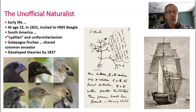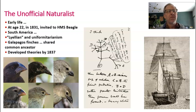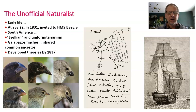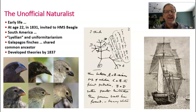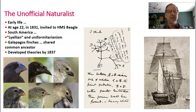Now we get to Darwin — the chapter title in your book is 'The Unofficial Naturalist.' His father was a physician, and Darwin grew up in a wealthy, well-to-do family. In his early childhood, he spent a lot of time outdoors and came to love nature — being intrigued and curious about it. He was essentially grooming himself to be a naturalist from his earliest years.